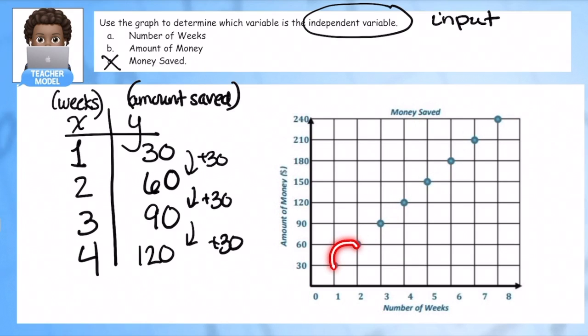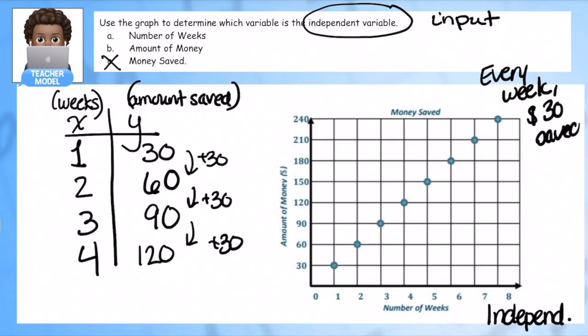So $30, I added another $30, adding another $30, adding another $30. Every single week that goes by, I'm adding another $30. So in this case, I will tell you that the independent variable is over here, because what is happening, every week I save $30. That's the story that this graph is telling me. Every week, $30 is saved. So that's what's independent, the number of weeks. And my dependent variable would be over here.